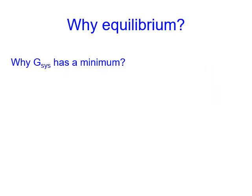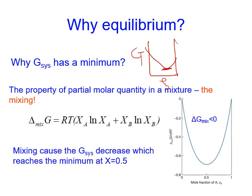Why does chemical equilibrium exist? On the plot of Gibbs energy over extent of reaction, why is there a minimum? To answer this, we need to remember the mixing effect from Chapter 5. For ideal gases, whenever you mix two gases, the Gibbs energy change is always less than zero. The driving force is the entropy increase — a 50-50 percent mixture of the two gases gives maximum entropy and minimum Gibbs energy.